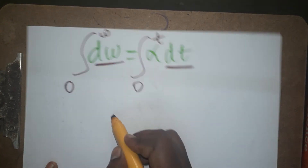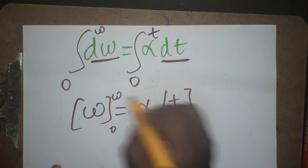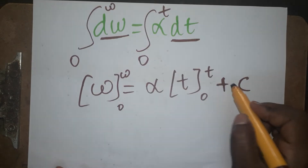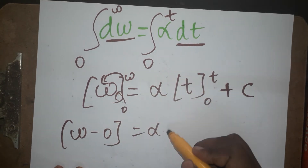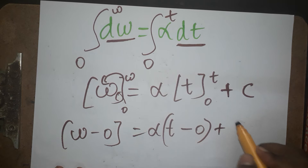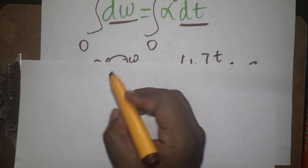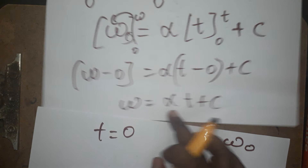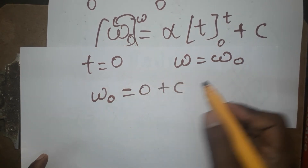The integration of d(omega) from 0 to omega, and alpha times integration of dt from 0 to t. The result includes an integration constant plus C. Applying the limits: higher limit minus lower limit gives omega equals alpha t plus C. Now, when time is zero, angular velocity equals the initial angular velocity omega naught, so substituting: omega naught equals 0 plus C.